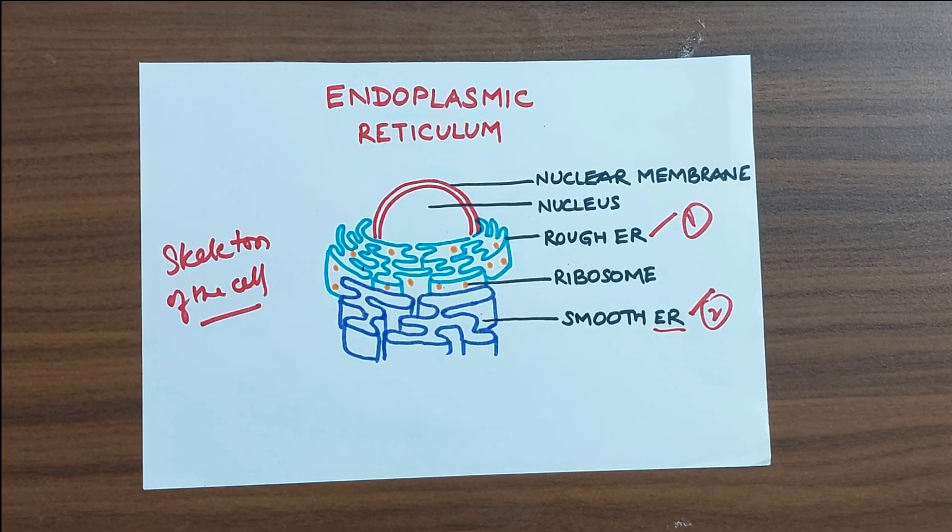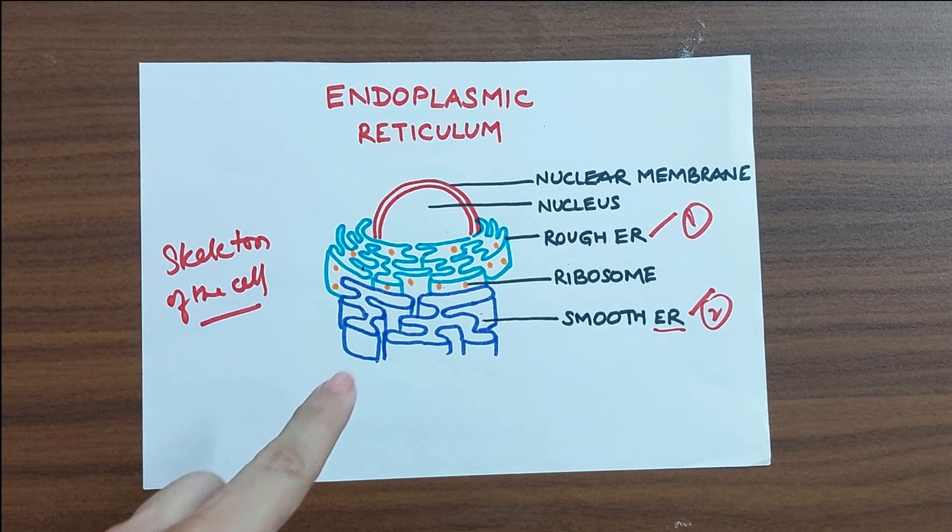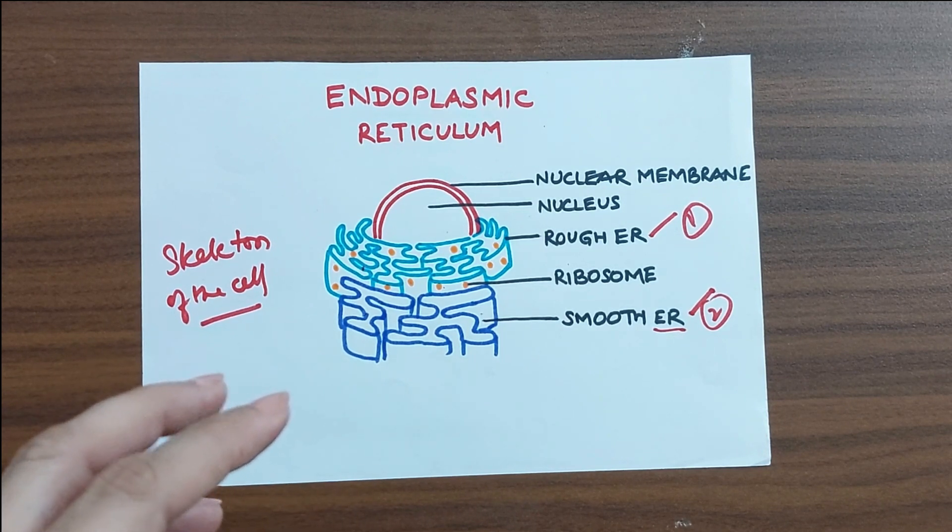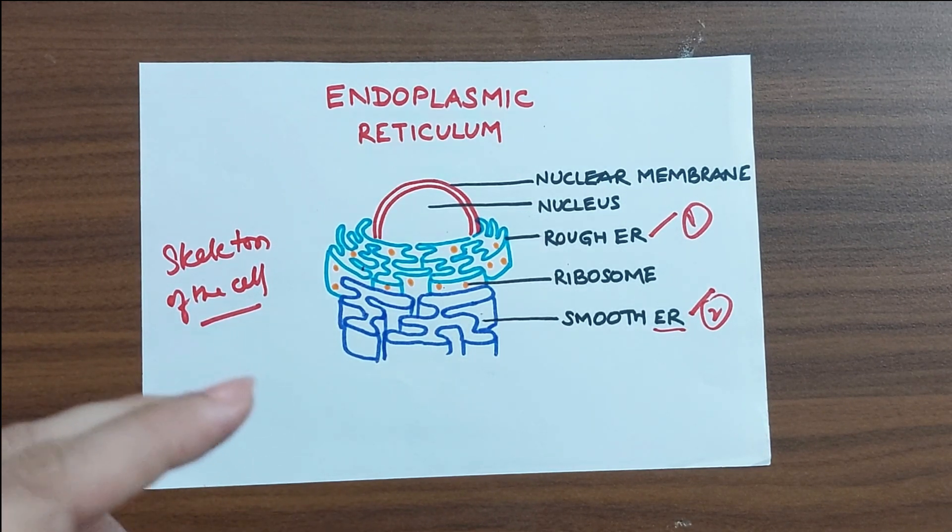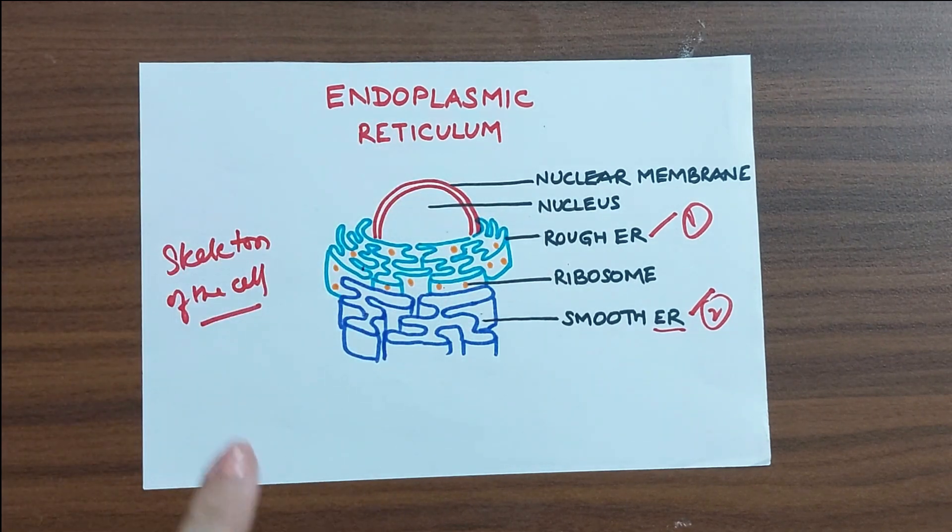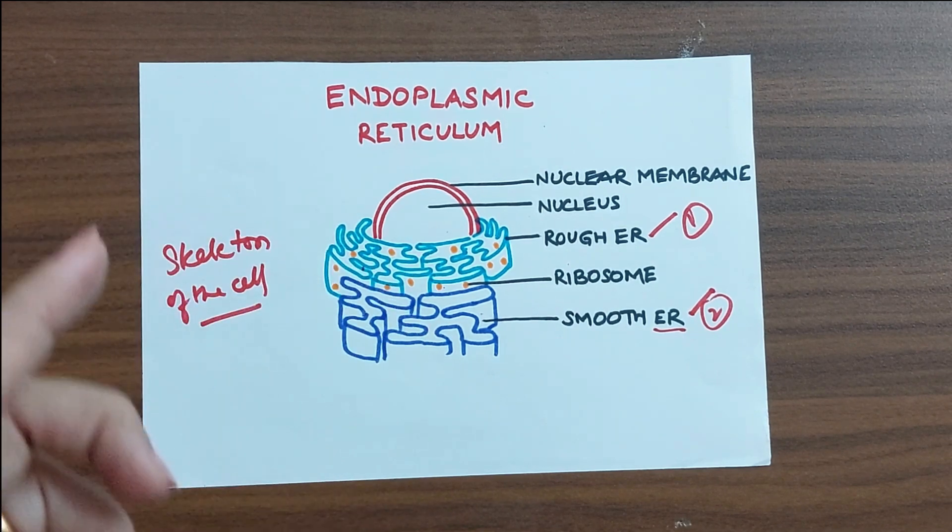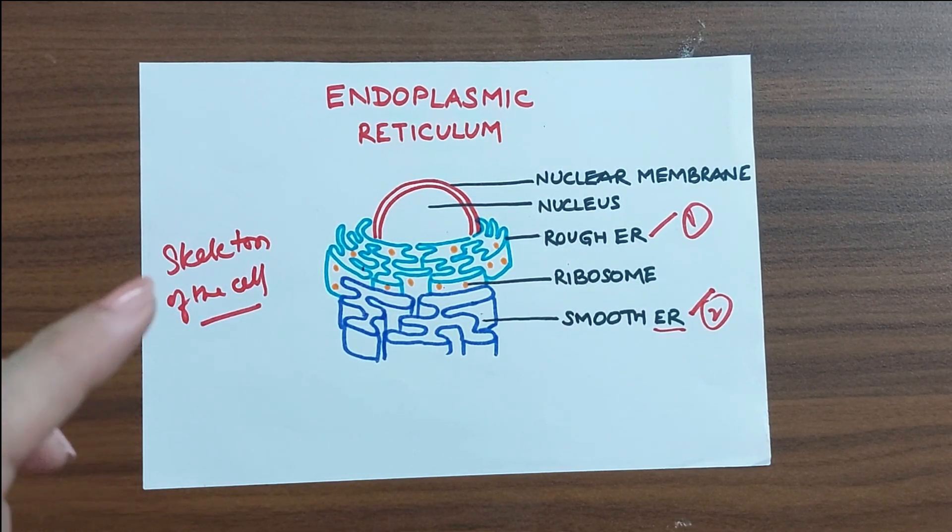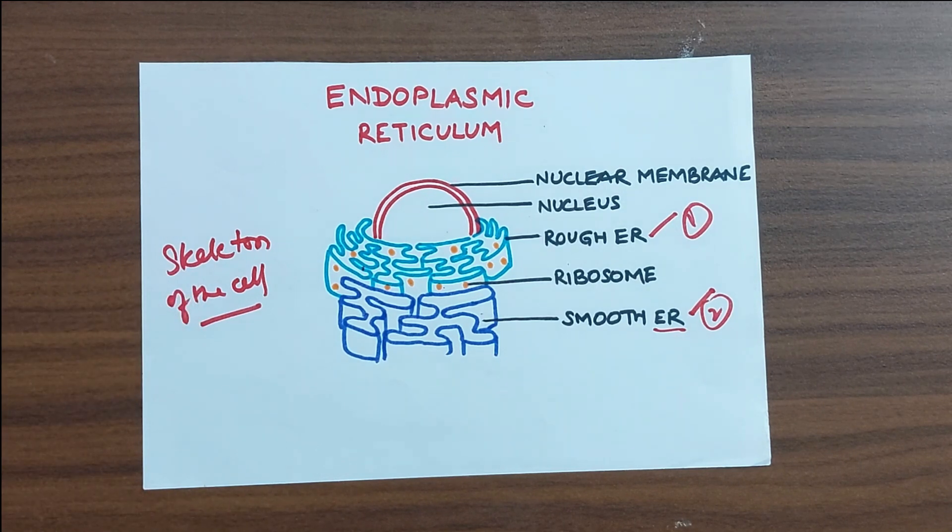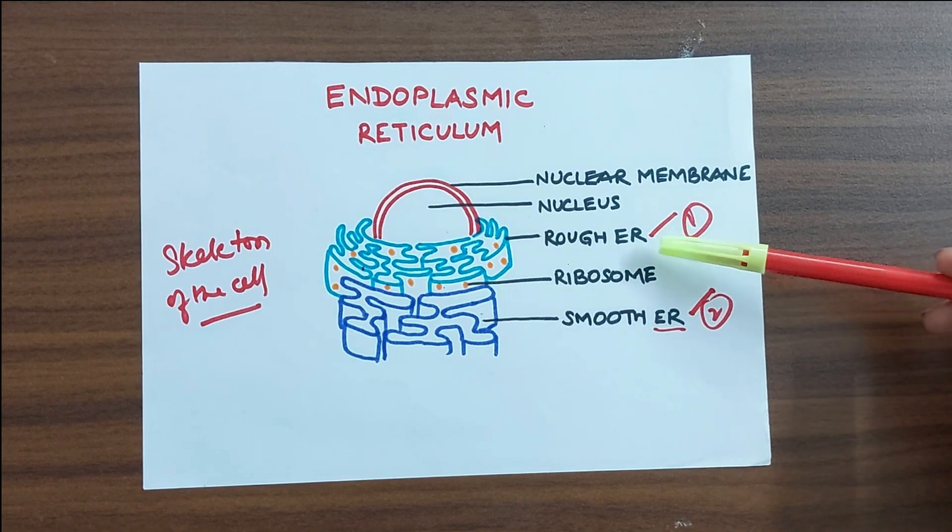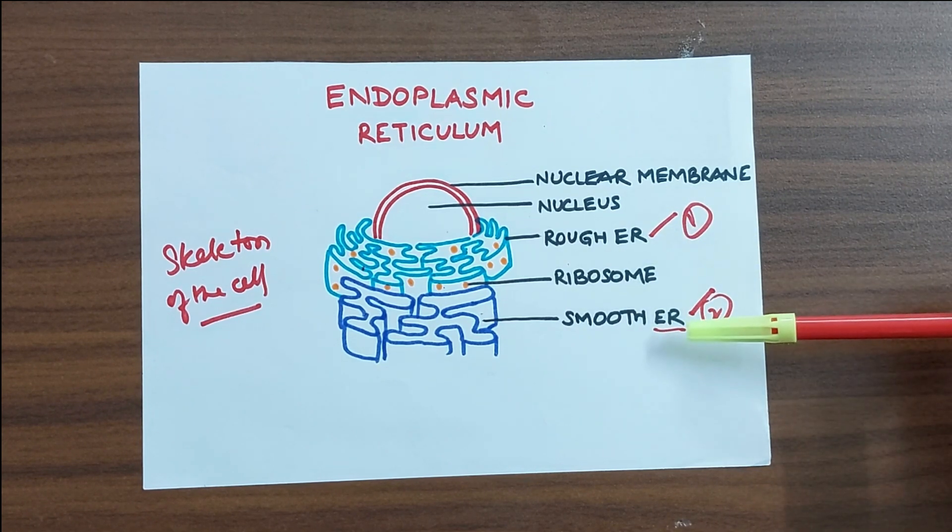The next organelle we are going to see is endoplasmic reticulum. Endoplasmic reticulum is an irregular network of double membrane. And it has a lumen which is fluid filled and it is present across the cytoplasm. So this network, it helps in making a kind of a supporting framework and hence it is also known as the skeleton of the cell.